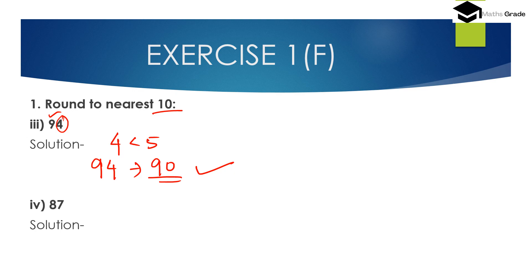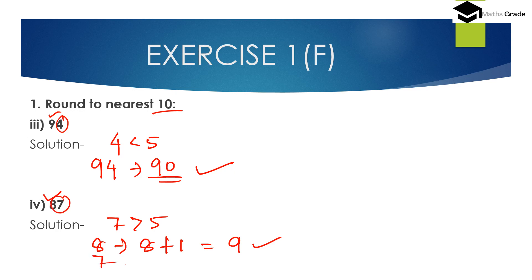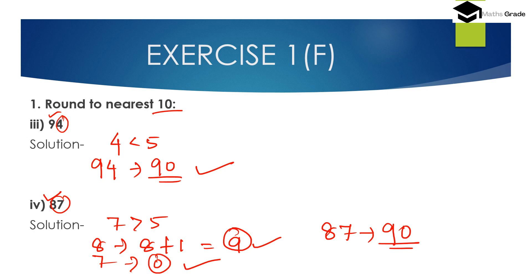4th bit, 87. Here unit place digit is 7, and 7 is greater than 5. So we have to add 1 to the 10th place digit. Here 10th place digit is 8, so 8 changes to 8 plus 1, which is 9. And the unit place digit 7 changes to 0. So 87 rounded to the nearest 10 is 90.